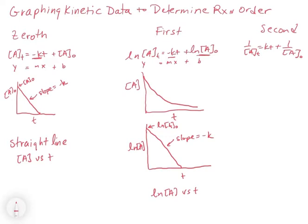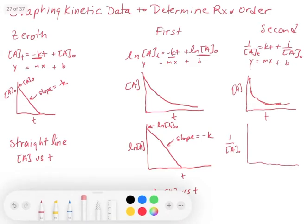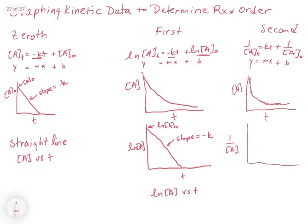Now let's look at second order. If we overlay y equals mx plus b, plotting concentration of A versus t won't give a straight line — we'll get an inverse curve because it's an inverse function. To get a straight line, we need to plot 1 over A versus t. In this case, you get a line with a positive slope where the y-intercept is 1 over A₀, and the slope equals k. So to get a straight line out of second order, plot 1 over A versus t.